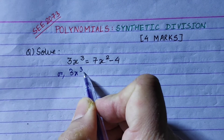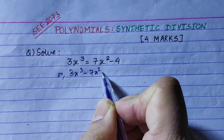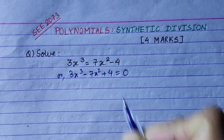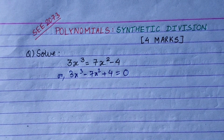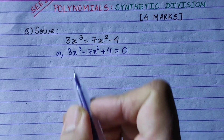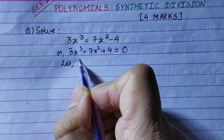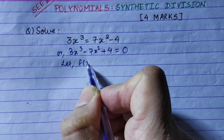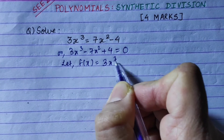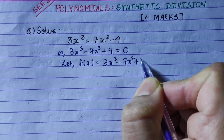We rearrange the equation: 3x³ - 7x² - 4 = 0. Now we have a polynomial. Let f(x) = 3x³ - 7x² - 4.